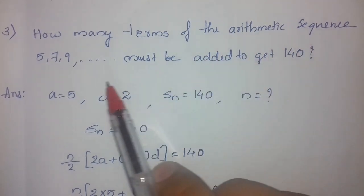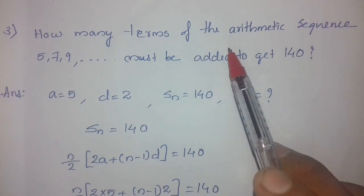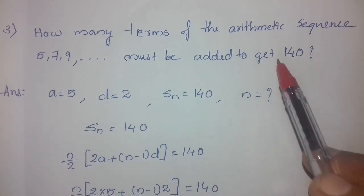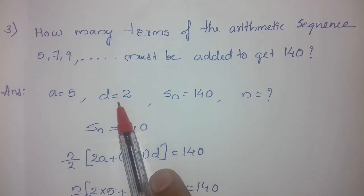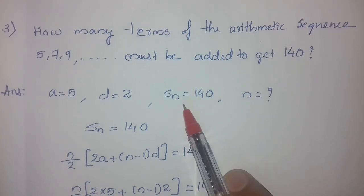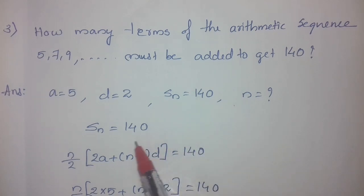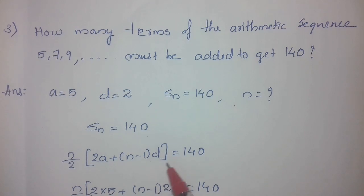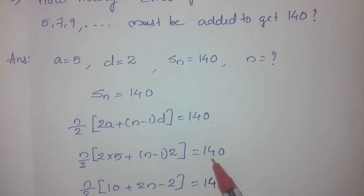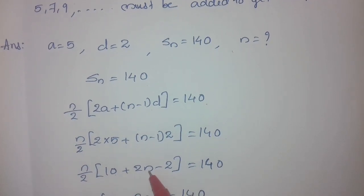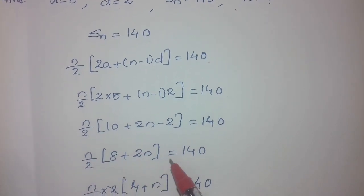Next problem: How many terms of the arithmetic sequence 5, 7, 9, etc. must be added to get 140? Here Sn equals 140. Using the formula: n by 2 into 2a plus n minus 1 into d equals 140. Substituting a equals 5 and d equals 2: n by 2 into 2 times 5 plus n minus 1 times 2 equals 140, which gives n by 2 into 10 plus 2n minus 2 equals 140, simplifying to n by 2 into 8 plus 2n equals 140.